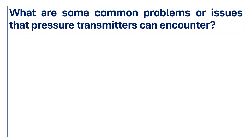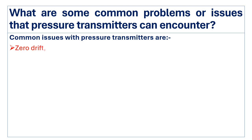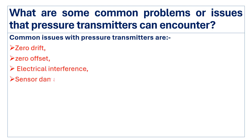What are some common problems or issues that a pressure transmitter can encounter? Some common issues include zero drift, zero offset, electrical interference, and sensor damage. These issues can be resolved through periodic calibration and maintenance.